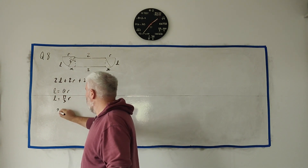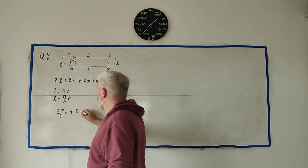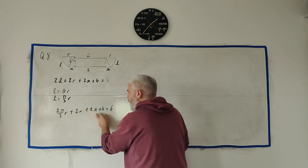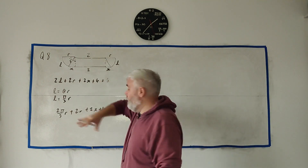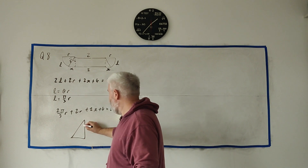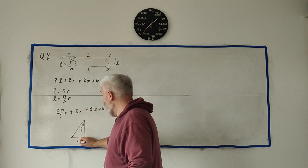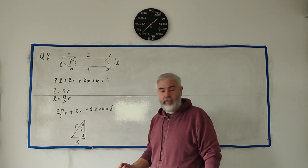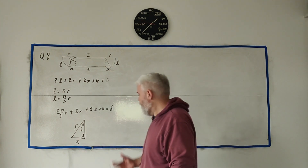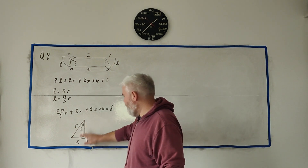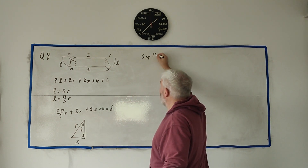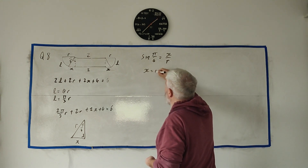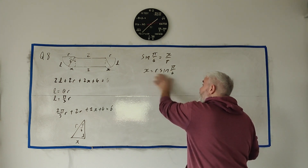Substituting that in: 2 times pi over 3 times OR, plus 2 OR, plus 2X, plus 4 equals 6. We still have two unknowns — OR and X. So let's express X in terms of OR using the same triangle as before. We have sine pi over 6 equals X over OR, so X equals OR sine pi over 6. Now instead of X we can substitute this expression, leaving only OR as an unknown.